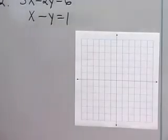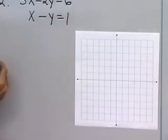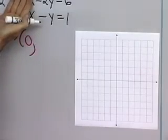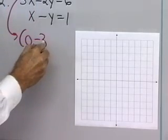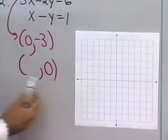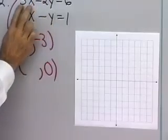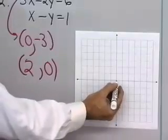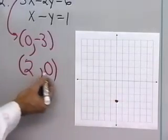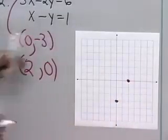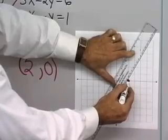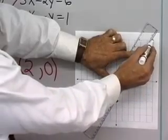Let's try another one. Here I have 3x minus 2y is equal to 6. Let's find some ordered pairs that satisfy this equation. When x is equal to 0, I have 3 times 0 is 0, so negative 2y is equal to 6, meaning y must be equal to negative 3. If I let y be equal to 0, then 3x is equal to 6, so x is equal to 2. I'll graph these two points: x is 0, y is negative 3, and x is 2, y is 0. Draw a line between them — it looks about like that.